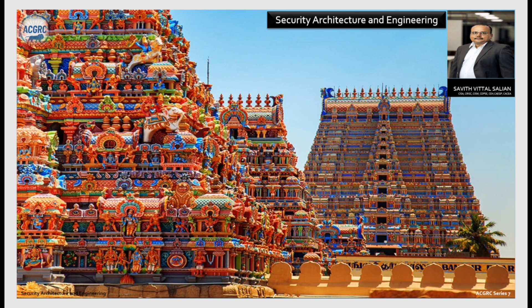In Phase 3, we turn the spotlight to real-world relevance through threat modeling methodologies like STRIDE, DREAD and PASTA. We will analyze actual breaches — what went wrong and what could have gone right. These case studies contrast vulnerable versus resilient architectures, giving you blueprints for building secure enterprise patterns while avoiding anti-patterns that expose organizations to risk.